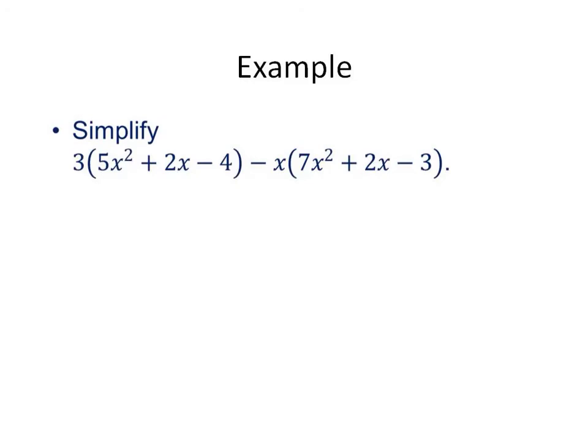Same situation that we just had, but you need to be so careful that you distribute a negative x there. That negative x gets distributed, the 3 also gets distributed. We're going to have 15x squared plus 6x minus 12. There's the first one.